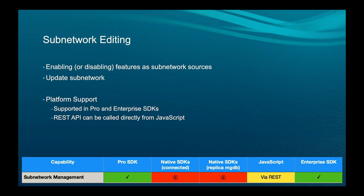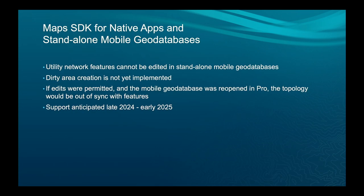Subnetwork editing — enabling or disabling features as a subnetwork source or running updates of network — right now it's just Pro and Enterprise, but we'll be expanding access to other platforms eventually. Also, if you use the Maps SDK for Native Apps with a standalone mobile geodatabase — a database you create in Pro and sideload onto your device — we currently don't support editing of those, but that'll be coming either later this year or early 2025.